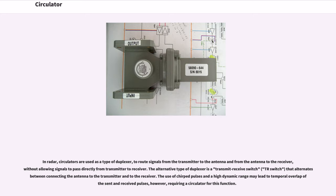In radar, circulators are used as a type of duplexer, to route signals from the transmitter to the antenna and from the antenna to the receiver, without allowing signals to pass directly from transmitter to receiver. The alternative type of duplexer is a transmit-receive switch that alternates between connecting the antenna to the transmitter and to the receiver. The use of chirped pulses and a high dynamic range may lead to temporal overlap of sent and received pulses, however, requiring a circulator for this function.